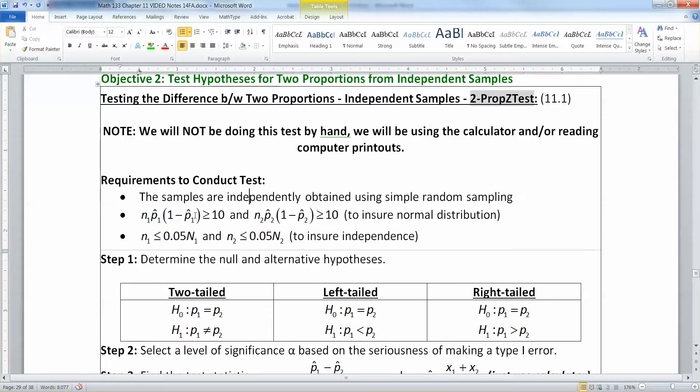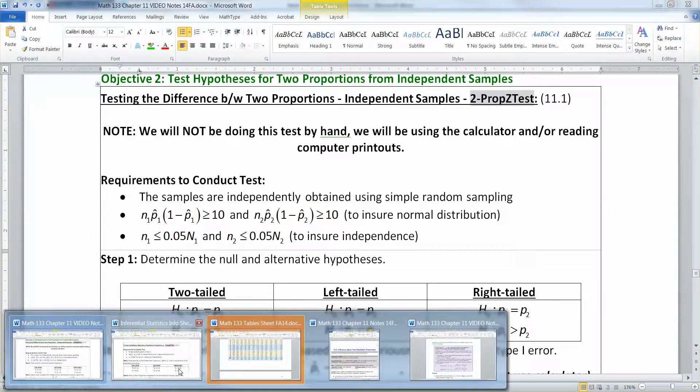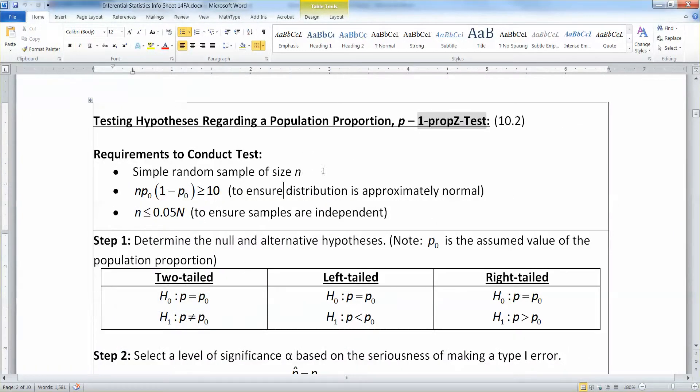Then you need n times p times 1 minus p to be greater than or equal to 10 for both samples. And that makes sense because that ensures normality. When we saw in chapter 10 single proportion tests we set that same condition but we set it only for a single value.